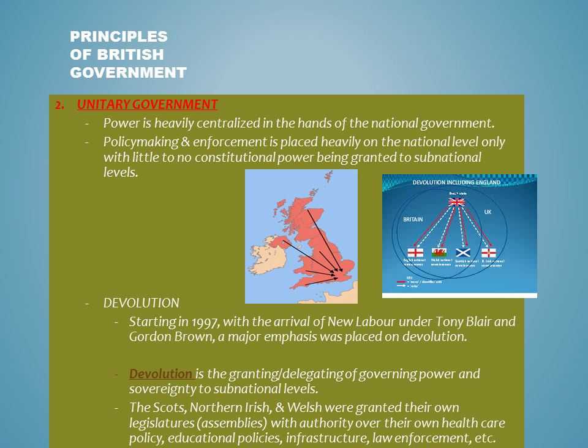Because of this, the Scots, Northern Irish, and Welsh now have their own national assemblies in which they can take care of policies such as health care, education, law enforcement, and infrastructure, to name a few.